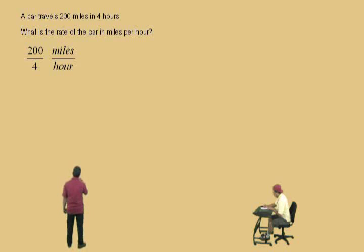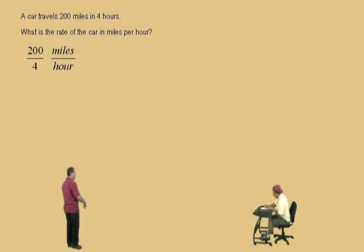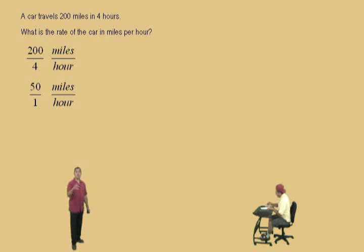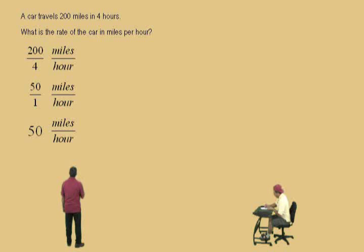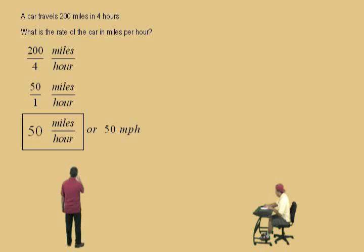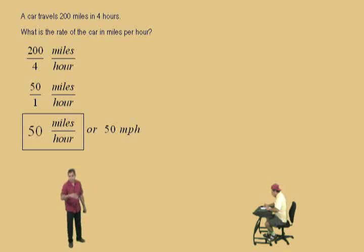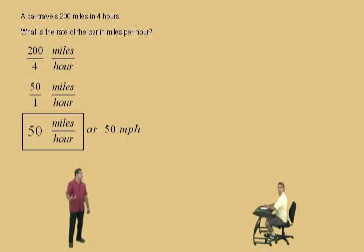Okay, so now we can reduce 200 over 4 by dividing top and bottom by 4 — right, Charlie? — which gives us 50 over 1. So it's 50 miles per 1 hour, and we write that as 50 miles over hour. That is our answer. We can use the abbreviation MPH, which means 50 miles per hour. That's on the speedometer of your car. What does 50 MPH mean? It means 50 miles per 1 hour.